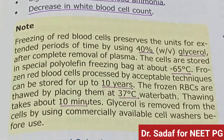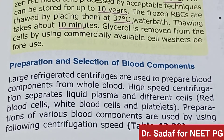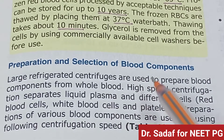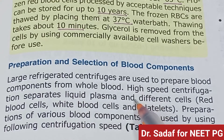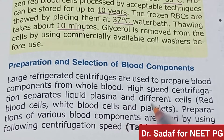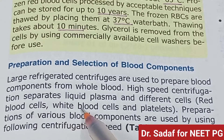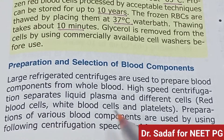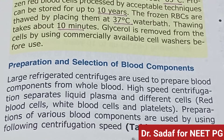For preparation of blood components, large refrigerated centrifuges are used to prepare components from whole blood. High-speed centrifugation separates liquid plasma from the different cells — red blood cells, WBCs, and platelets. Packed red cells: 5 minutes at 5,000 × g (heavy spin). Cell-free plasma and cryoprecipitate: 7 minutes at 5,000 × g (heavy spin). Platelet-rich plasma: 3 minutes at 2,000 × g (light spin).